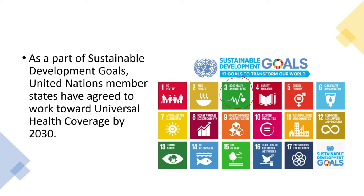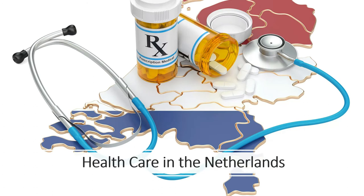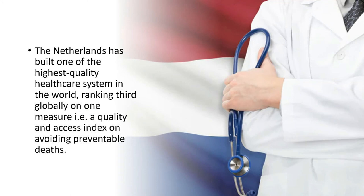Now we will look at the health care system in three different countries, starting with the Netherlands. The Netherlands has built one of the highest-ranked health care systems in the world, ranking third globally on a major quality and access index — specifically on avoiding preventable deaths.